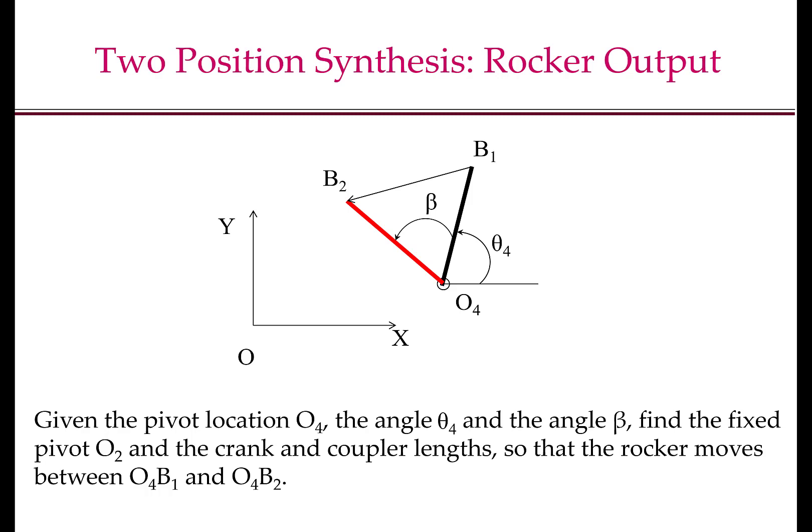Recall that the assumptions that we made for this rocker output motion synthesis was first that we know the location of one of the fixed pivot O4. When I say know, I mean we choose it. We choose the link length of the follower link or the output link, which is the length of the link O4B in this picture. We assume that we know the angle theta 4, that is one extreme position of the follower link. Beta, or the range of motion of the rocker link is given to us, and in this picture O4B1 and O4B2 shows the two extreme positions of the output link. Our goal is to compute the fixed pivot O2, the crank and coupler lengths so that the rocker moves between O4B1 and O4B2.